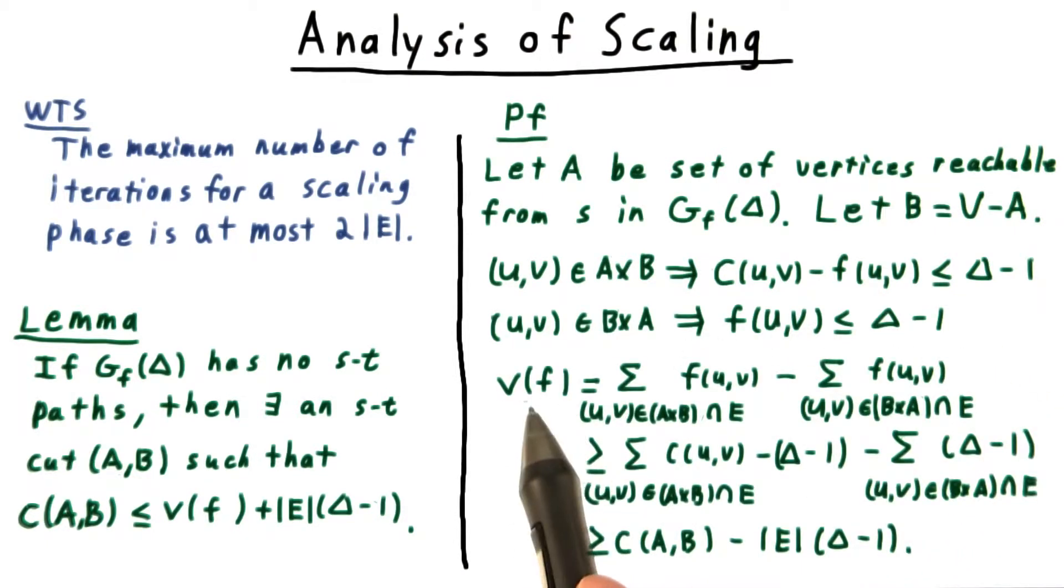The value of the flow then is the flow out of A minus the flow back into A. And using these bounds here, we can bound this by the capacity minus delta minus 1. And similarly, for these back edges, we can do that with the delta minus 1 bound.